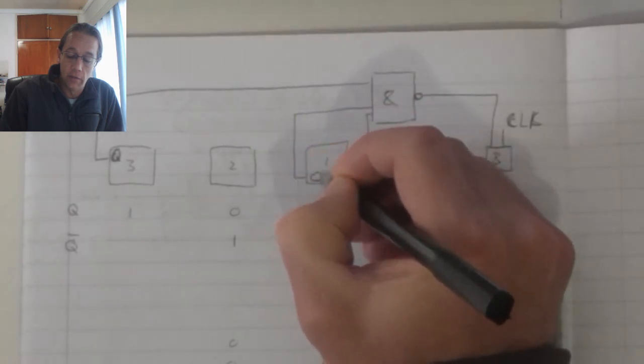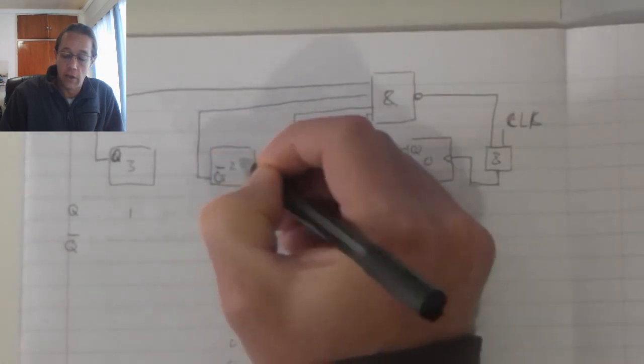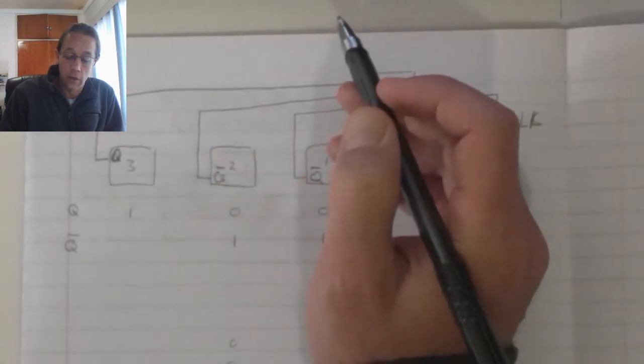So that one's going to go to NOT Q over there, and that one is going to connect to NOT Q over there.